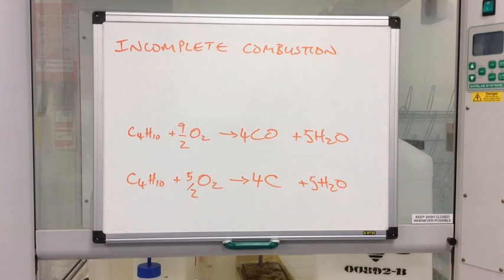So I've used butane to demonstrate this. So the first equation we haven't produced carbon dioxide, we've produced carbon monoxide and water. And in the second equation we formed carbon itself. So that would be apparent by black smoke because we're forming soot particles instead of an oxide of carbon.